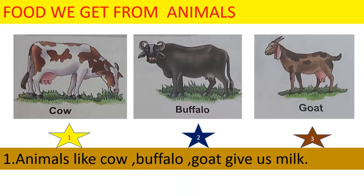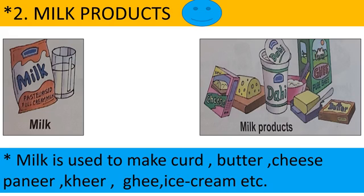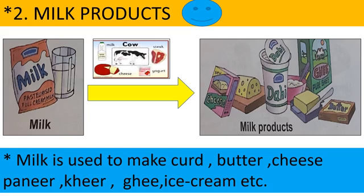Animals like cow, buffalo, and goat give us milk. Milk is used to make curd, butter, cheese, paneer, kheer, ghee, ice cream, and more. These are called milk products. See the picture and learn all of these with their spelling.